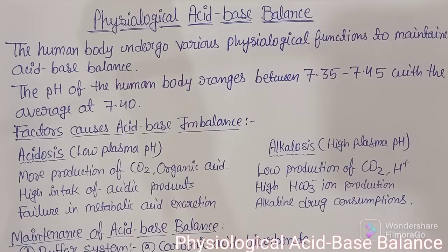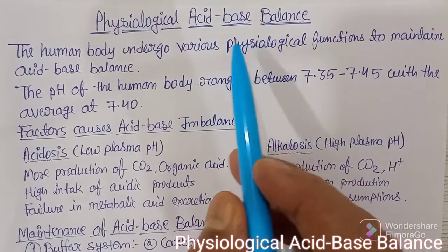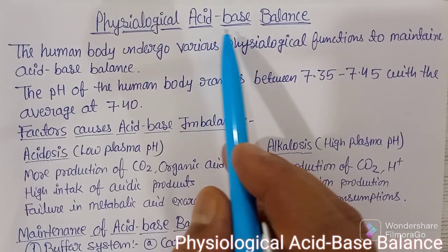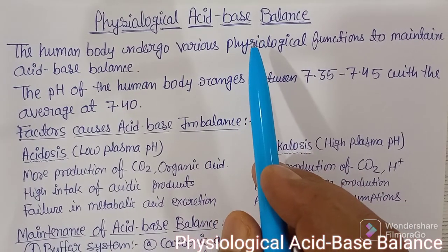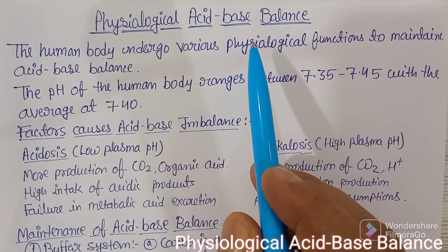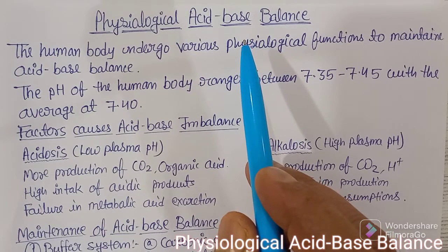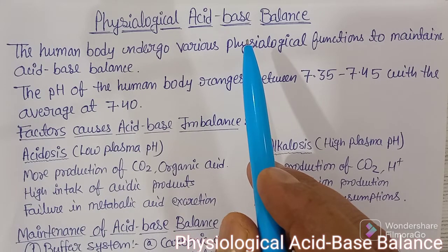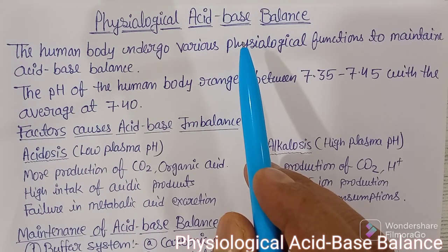We are going to discuss physiological acid-base balance. Acid-base balance is maintained in our blood, and the normal pH of the blood, which is 7.40, has to be maintained at each and every part of the body. How does the human body adopt physiological acid-base balance?